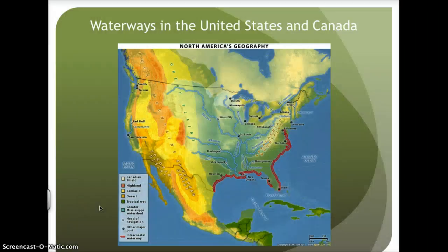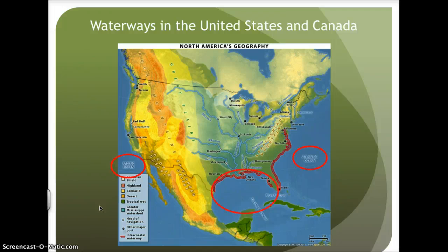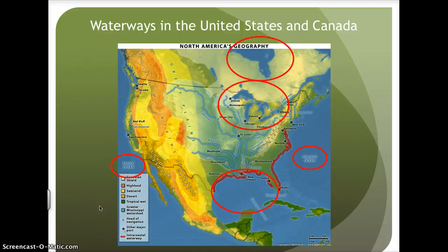Let's take a look at waterways in the United States and Canada. To the east we have the Atlantic Ocean. To the west we have the Pacific Ocean. To the south we have the Gulf of Mexico. Inland in the United States and bordering Canada, we have the Great Lakes, including Lake Superior, Lake Michigan, Lake Ontario, Lake Huron, and Lake Erie. Further to the north in Canada, we have the Hudson Bay.